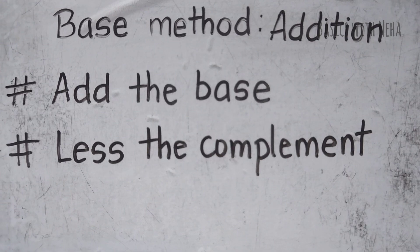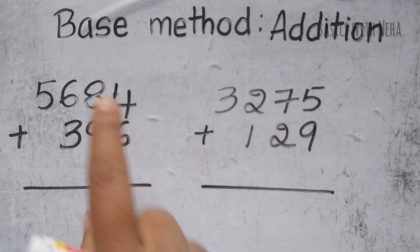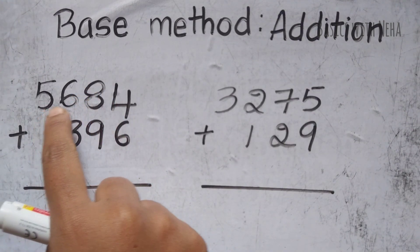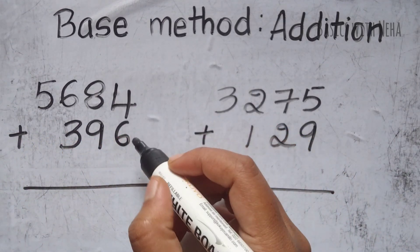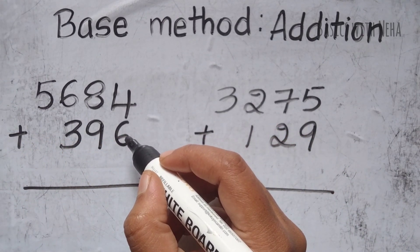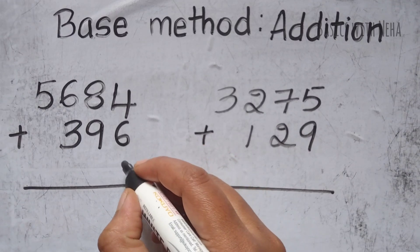Let's go to the first question. So the first question here is 5684 plus 396. So I have to find the complement of 6 in base 10. So it'll be 4.